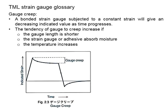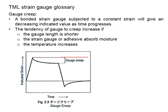Theoretically, this shall be the strain as measured from the test specimen. However, the strain was maintained constant over a period of time. Theoretically, if you maintain the strain, the indicated strain here shall remain constant as well, and the line shall be horizontal over a period of time.